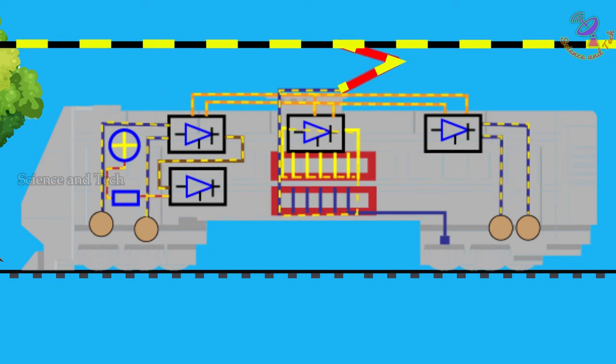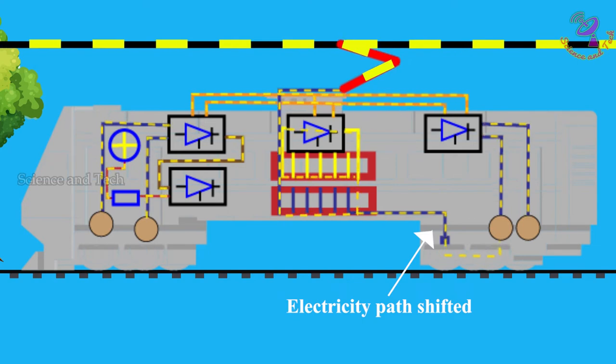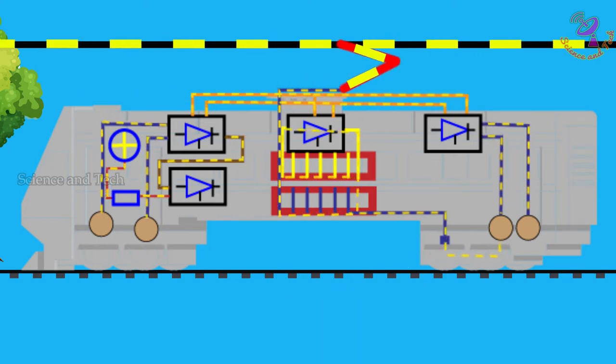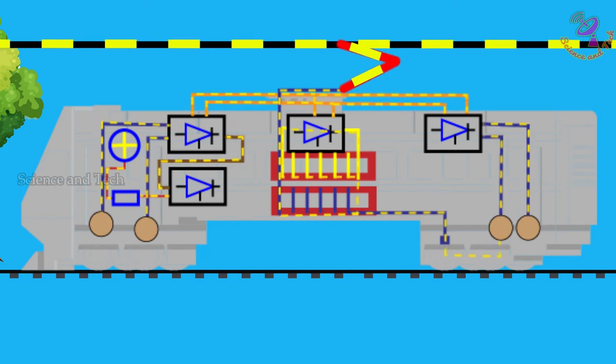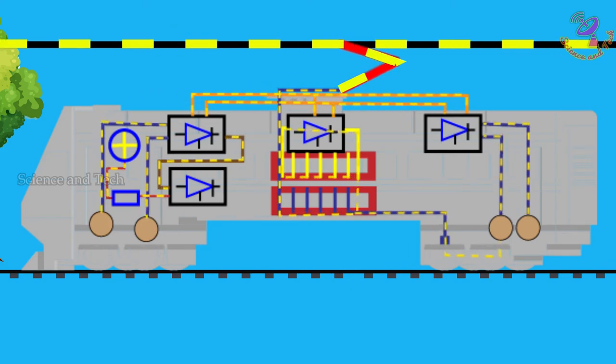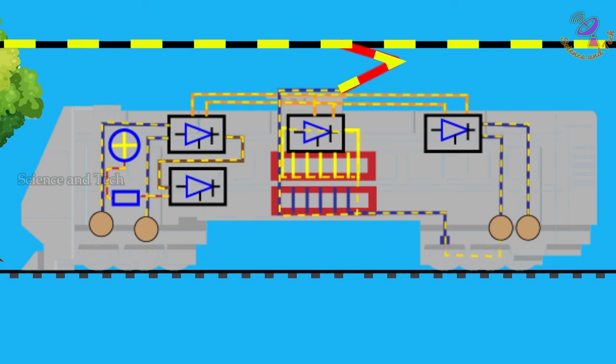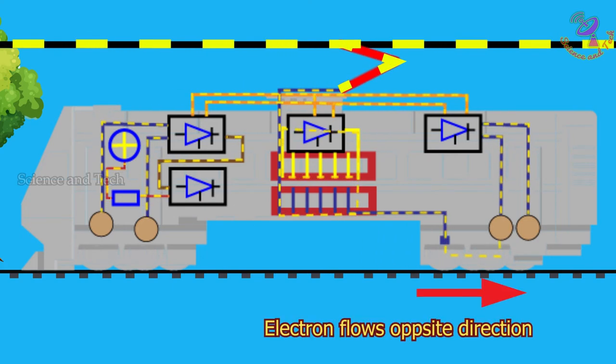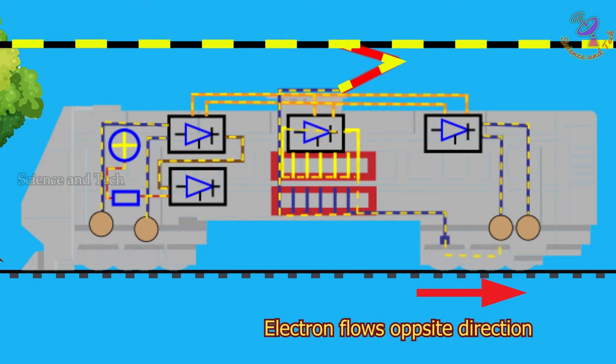To control a train, electricity is supplied from the transformer instead of the inverter by shifting the current path. When the electricity is supplied from the transformer, the electrons are flowing in the opposite direction to the electricity supplied from the inverter. From this opposite flow of electrons, the motor speed will reduce and stop completely.